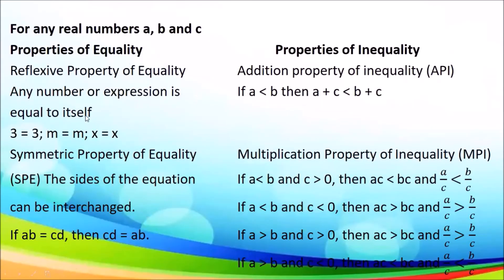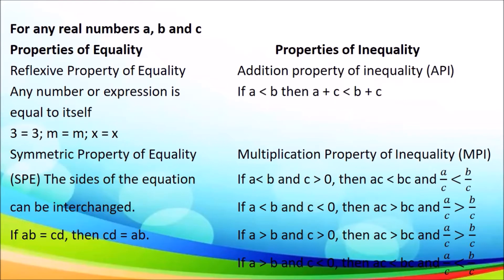We also have the reflexive property of equality: any number or expression is equal to itself. So 3 is equal to 3, M is equal to M, X is equal to X. The symmetric property of equality means the sides of the equation can be interchanged. For example, if AB equals CD, then CD equals AB — they just switched positions, left side going to the right side and vice versa. Even after interchanging, there is no change with regards to the result.